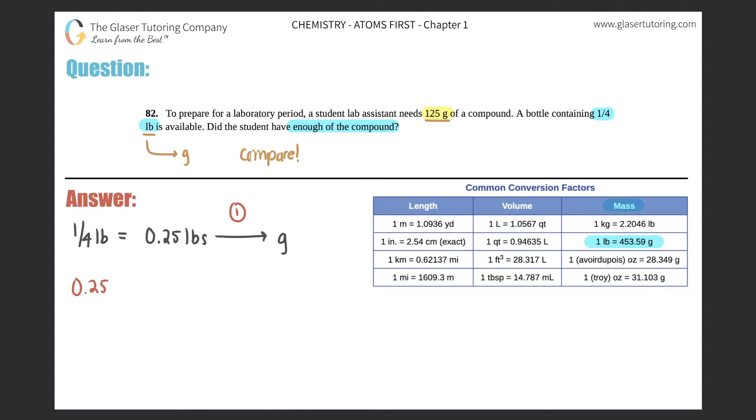So let's give it a shot. 0.25 pounds times by a ratio. Pounds goes on the opposite side and grams goes up on top. And the conversion is one pound. So one pound goes on the bottom, 453.59 grams goes up on the top.